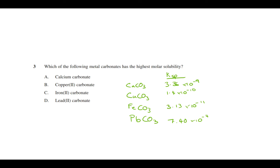The first thing we want to look at is the Ksp values, which come from the data sheet. I've made an error — this should say 10 to the −14, not −11. The quick thing to do is look at which one has the largest value. 3.36 × 10⁻⁹ is actually the largest value, which means it has the highest molar solubility — that is calcium carbonate with a Ksp of 3.36 × 10⁻⁹.